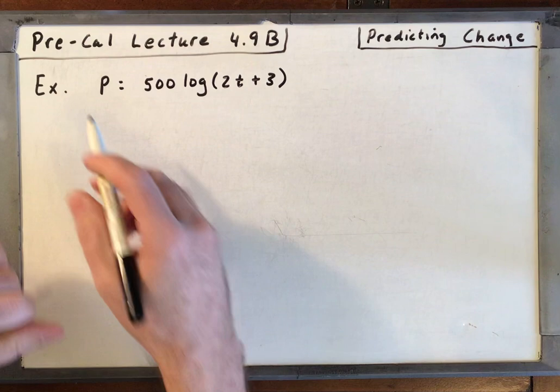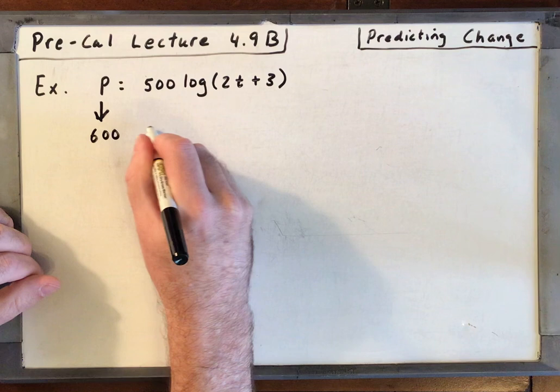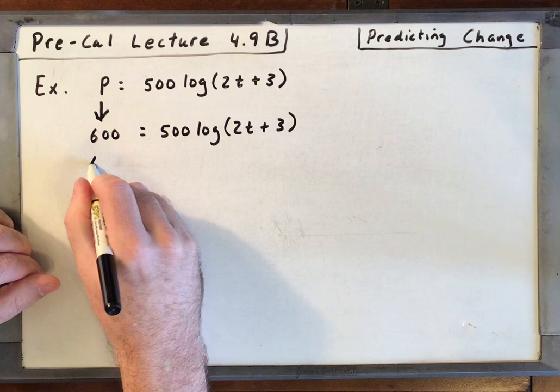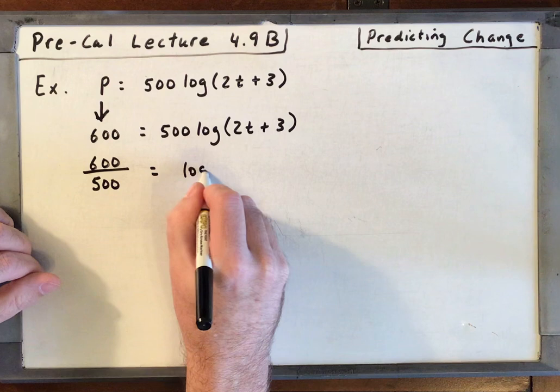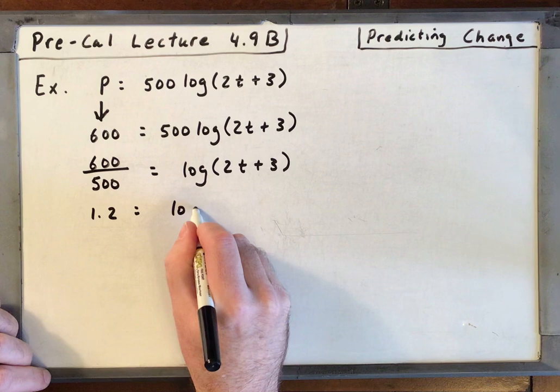I've gone ahead and written out the equation. So what it says is how long will it take the number of dealerships to equal 600? Well, that's p. 600 is equal to 500 times the log base 10 of 2t plus 3. I'm going to bring that 500 underneath so we can isolate that log. 600 over 500 is 1.2 if you put that in your calculator.